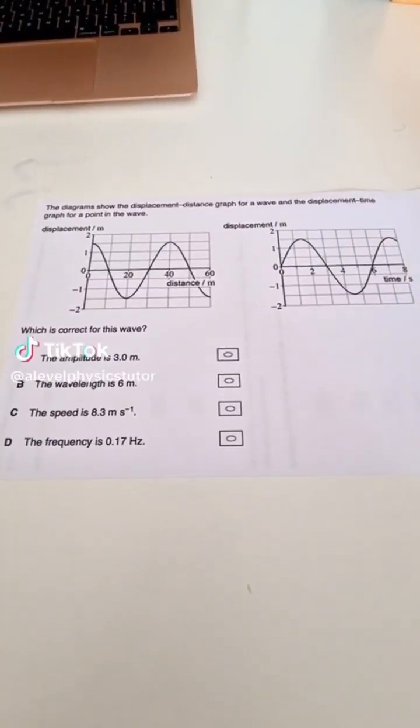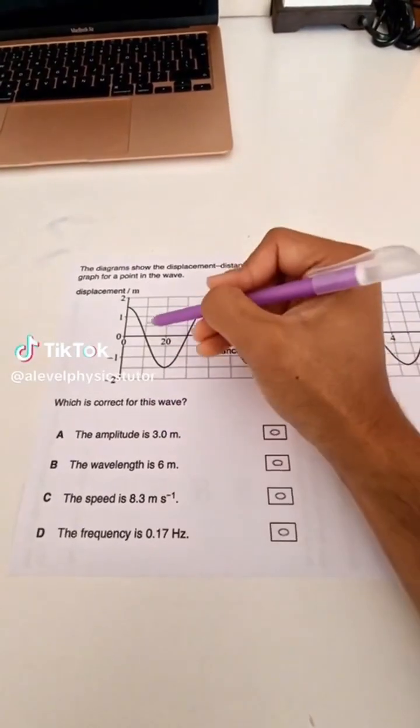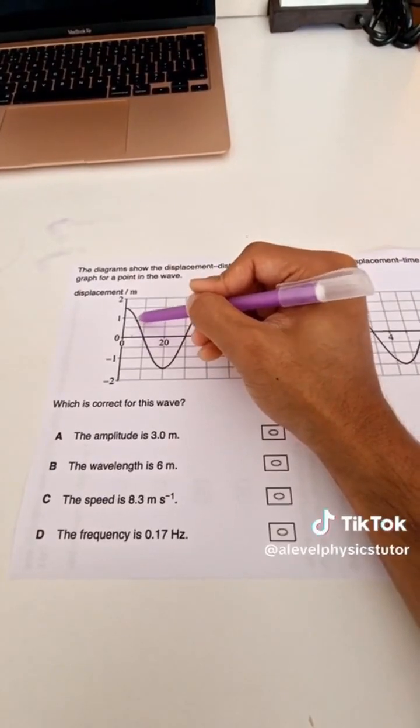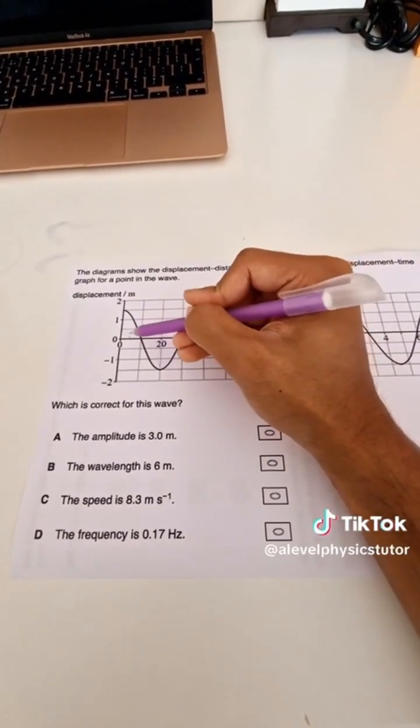Here's a multiple choice question about progressive waves. To start with, the amplitude is the distance from the equilibrium position to the maximum positive or maximum negative displacement that a wave reaches.